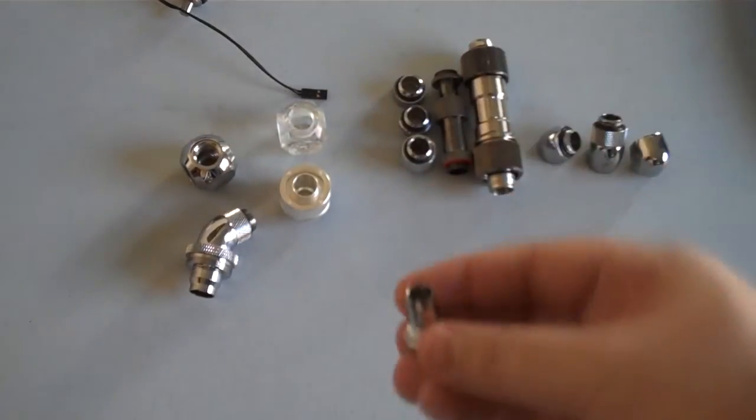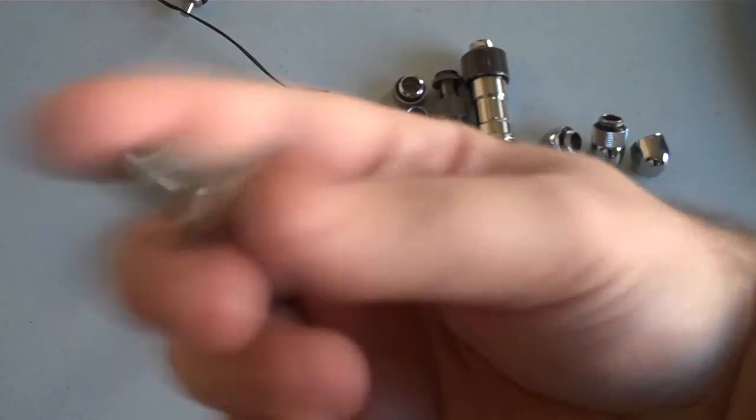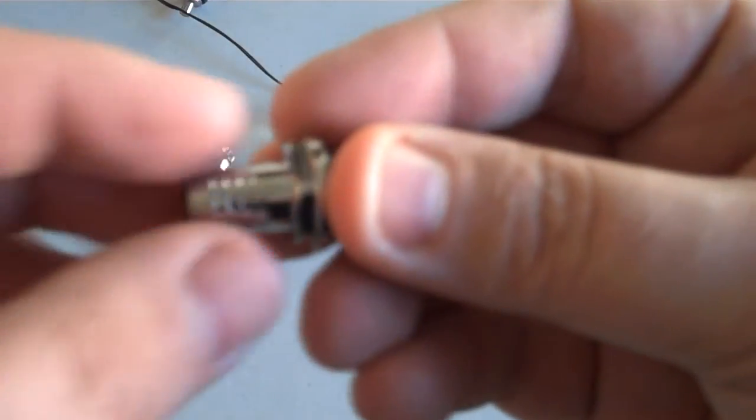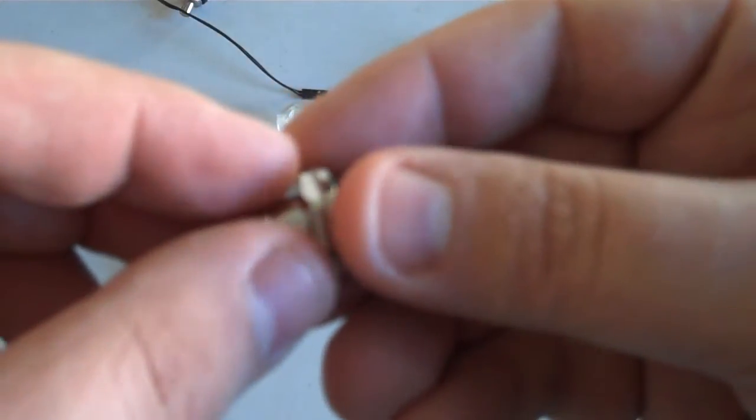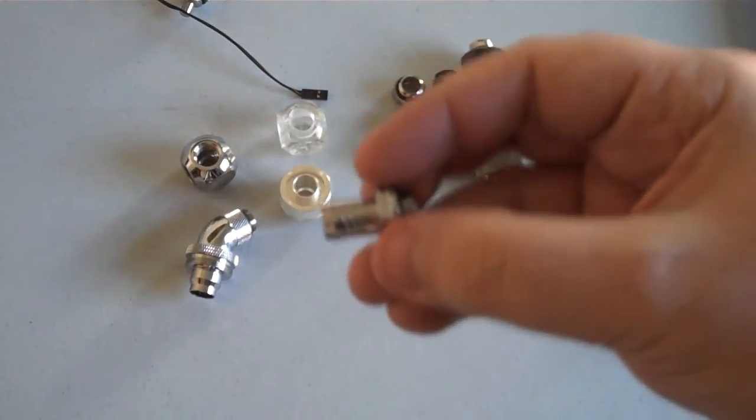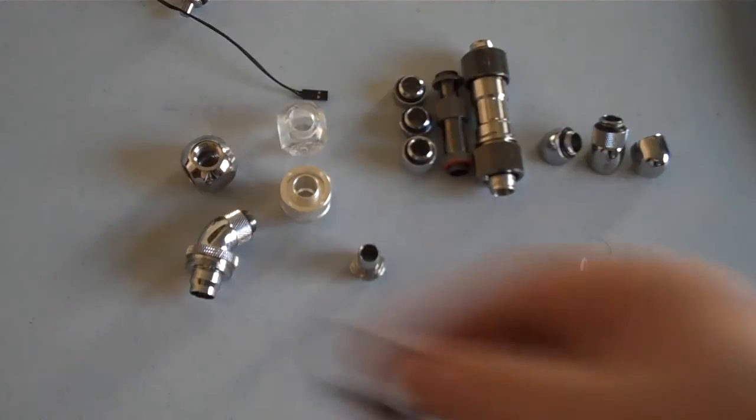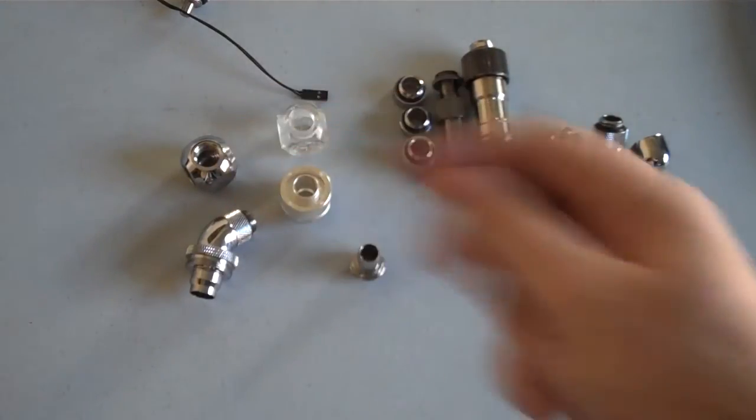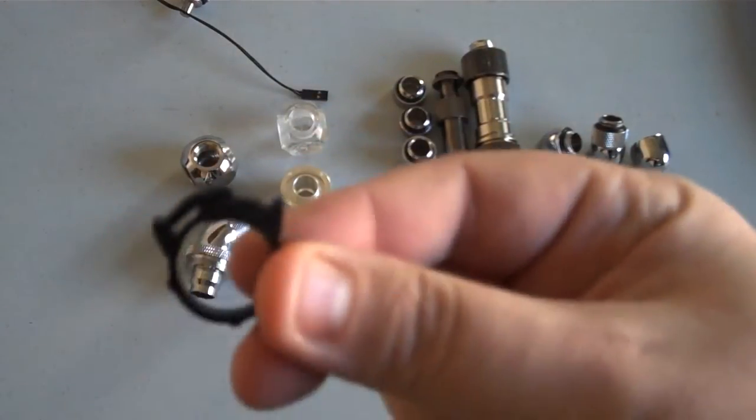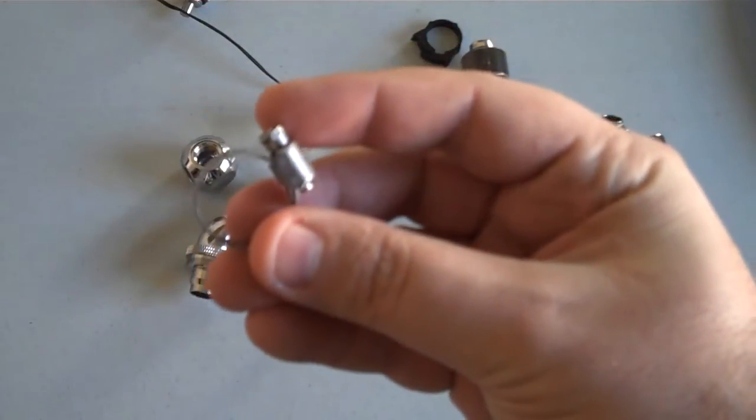Jumping straight into it, here's your typical barb fitting. This is a three eighths inch barb. You'll see the perforated edges - tubing goes over it and holds it on there. Most people when they use a barb will use a clamp or metal seat clamp.